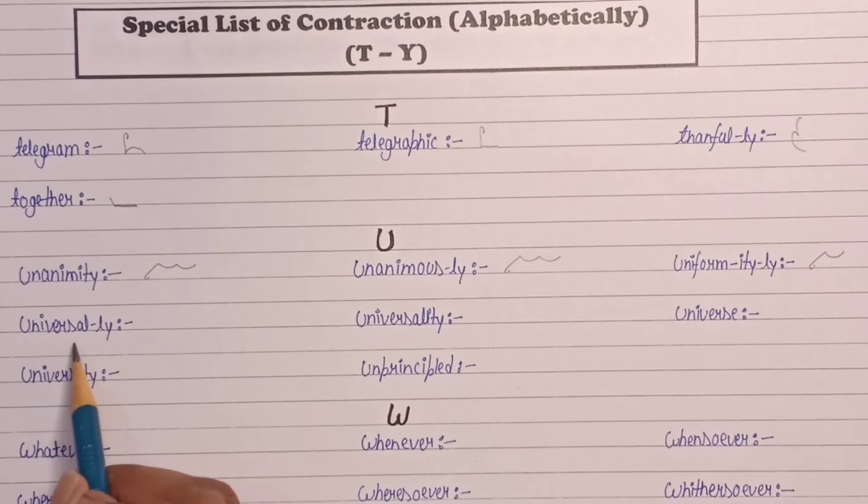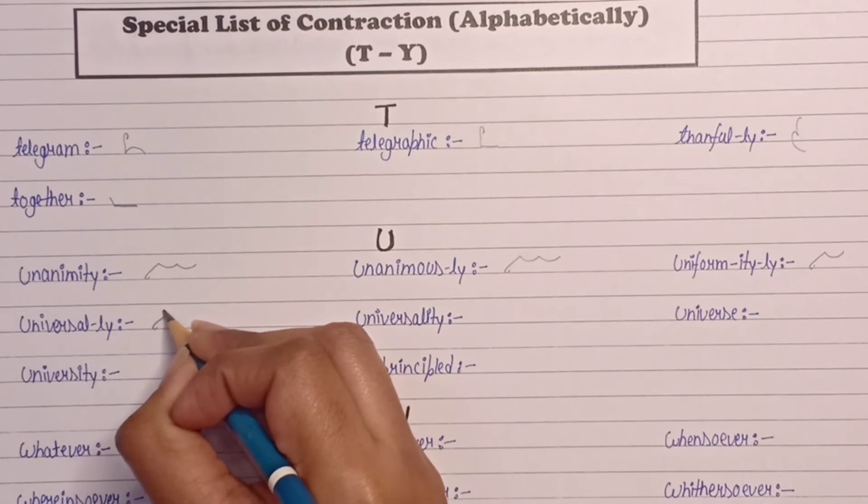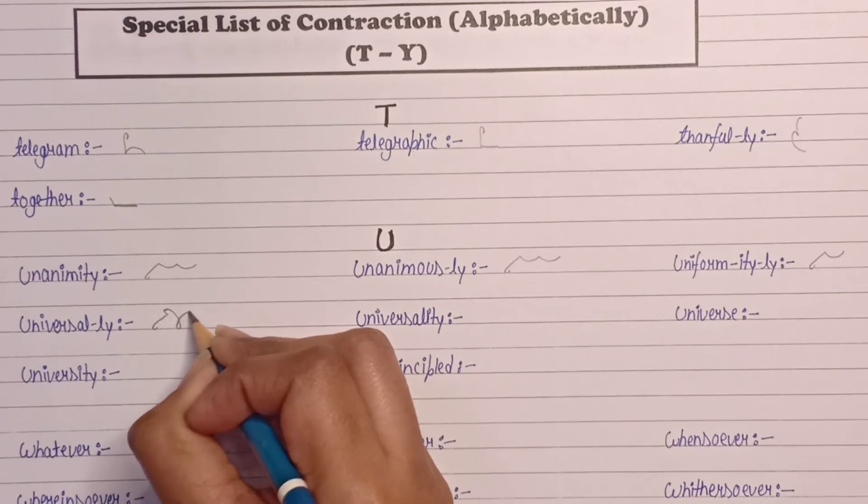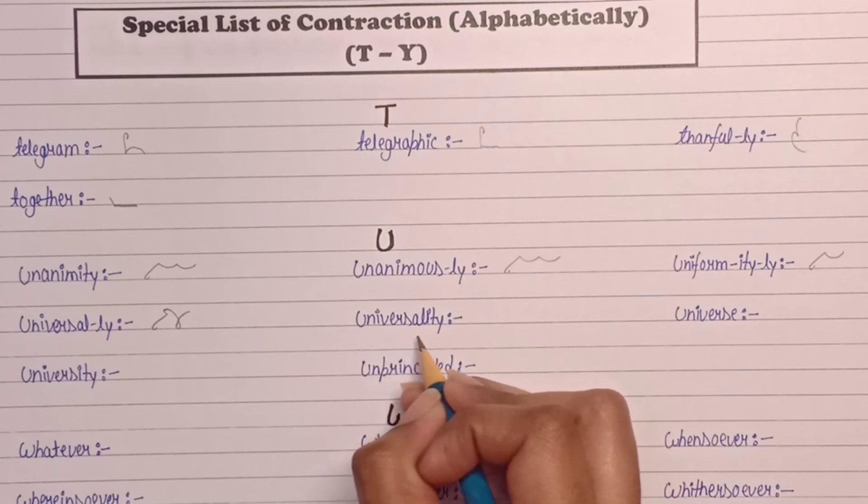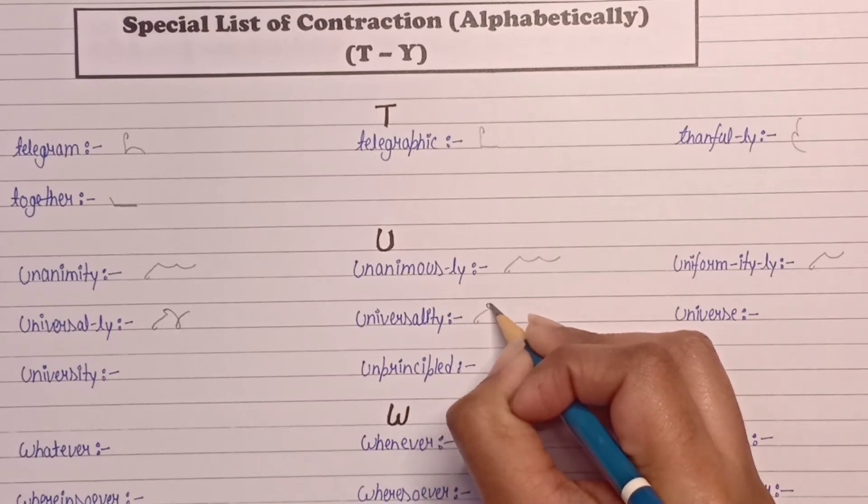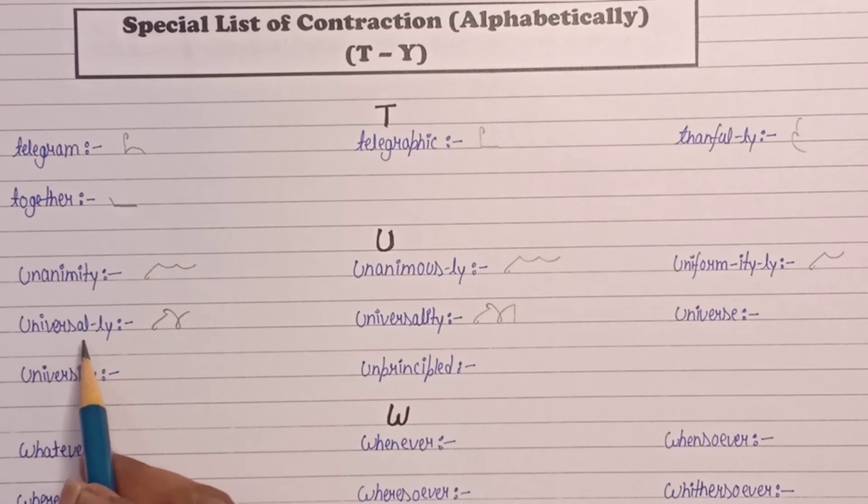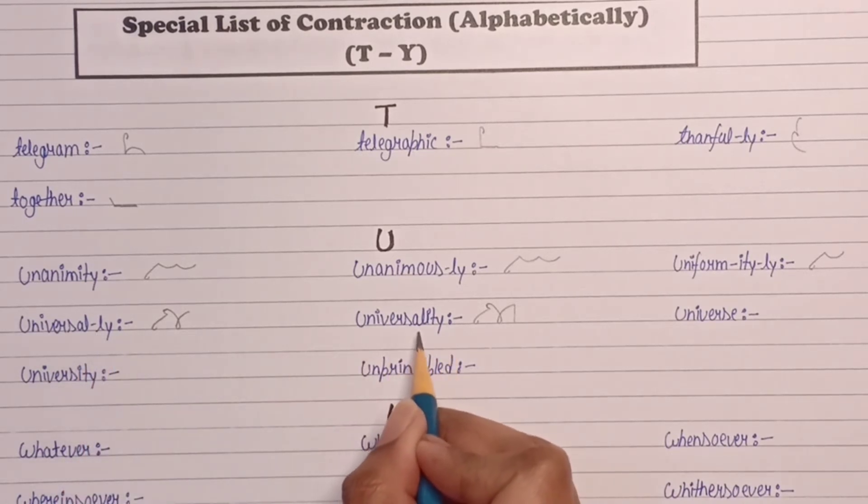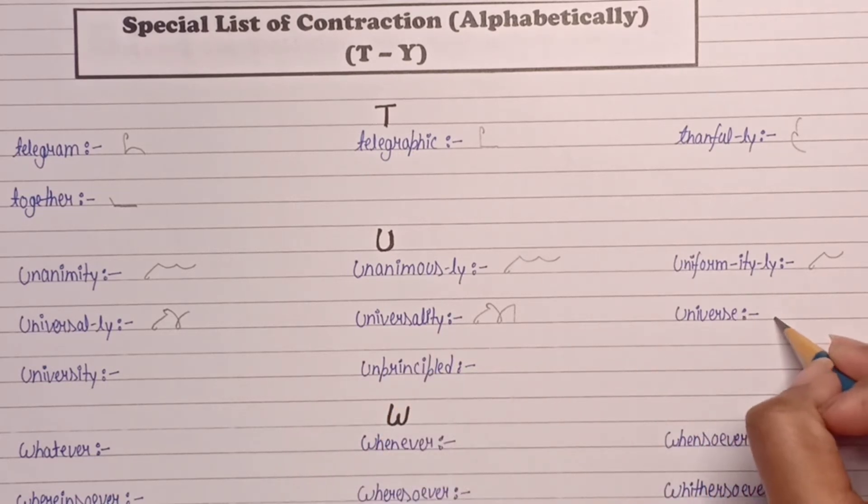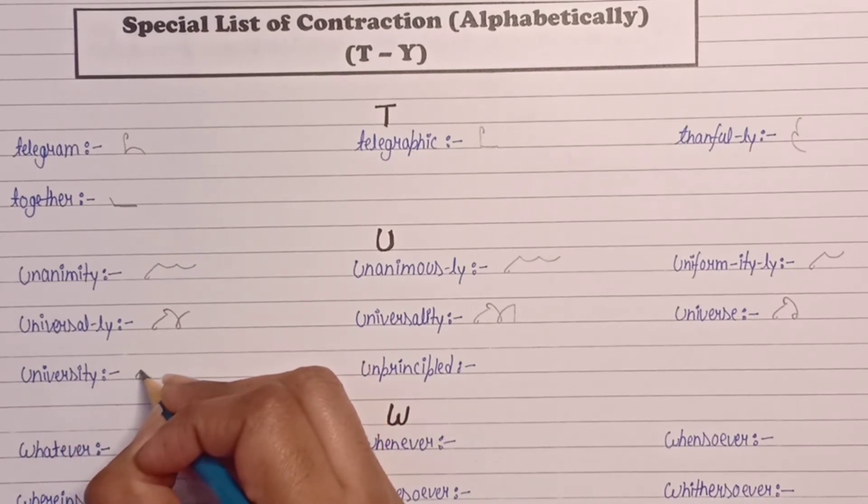Next is universal or universally: U, reverse form of V, R, and S-L. Universality: U-R-S-T-T. University: U, reverse form of V, R, S-T. The outline uses U, V, R, S, and T.